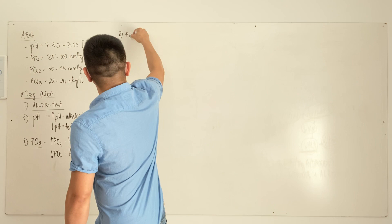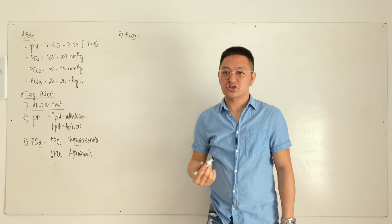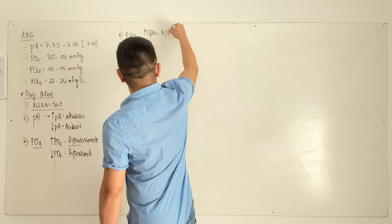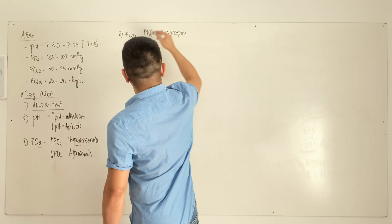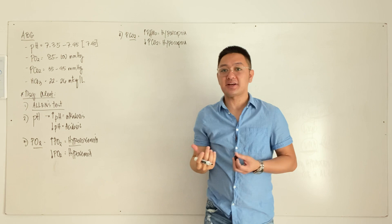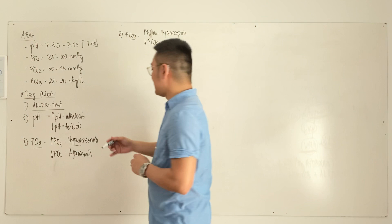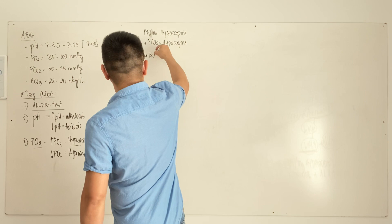Regarding partial carbon dioxide pressure — normal is 35 to 45 mmHg. If there is too much carbon dioxide, we call that hypercapnia. A decrease in partial carbon dioxide pressure is called hypocapnia.